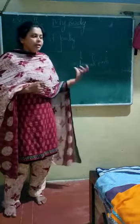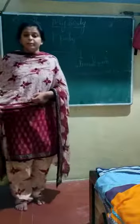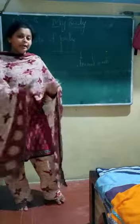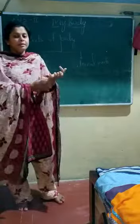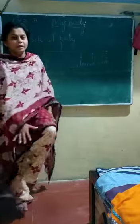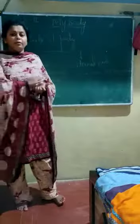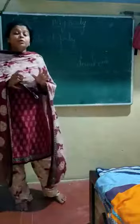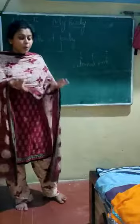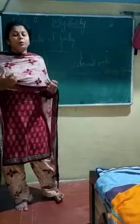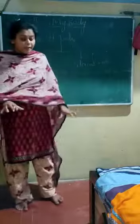Inside the leg there are bones joined together with muscles, and just like the arms, it is covered with skin. The feet are attached to the lower part of the leg, and toes are attached to the feet. The toes help give grip and support to hold the whole body.